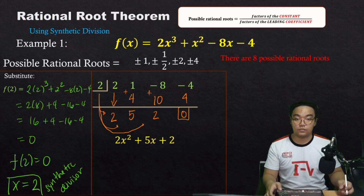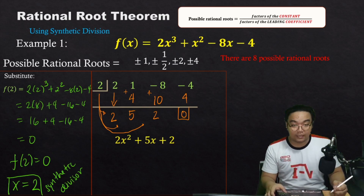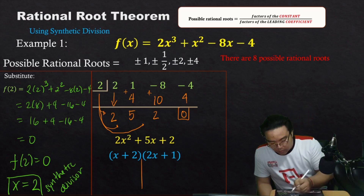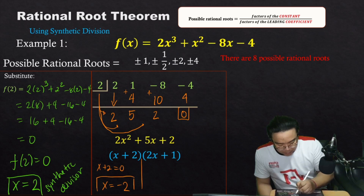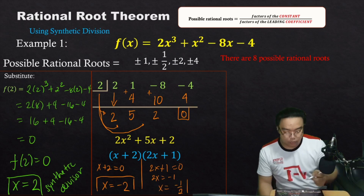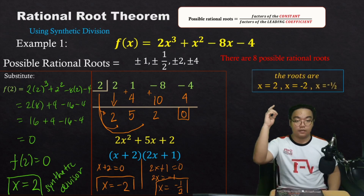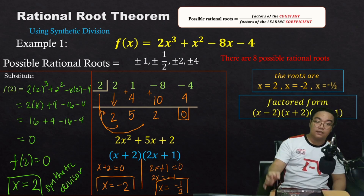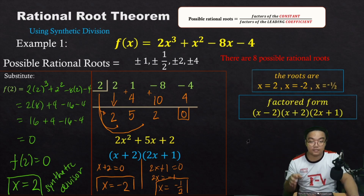The quotient is the quadratic polynomial 2x² + 5x + 2. Factoring this gives (x + 2)(2x + 1). Setting each factor to zero: x + 2 = 0 gives x = −2, and 2x + 1 = 0 gives x = −1/2. So using synthetic division we obtained all three roots: x = 2, x = −2, and x = −1/2, which can be written in factored form as (x − 2)(x + 2)(2x + 1).